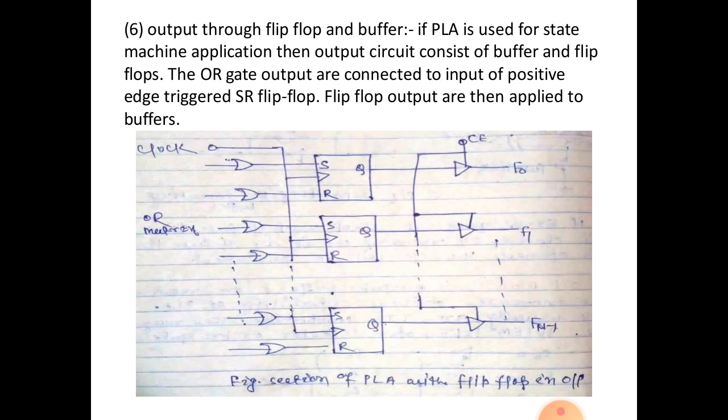Output through flip-flop and buffer: If PLA is used for state machine applications, then output circuit consists of buffer and flip-flops. The OR gate outputs are connected to inputs of positive edge triggered SR flip-flops. Flip-flop outputs are then applied to buffers.